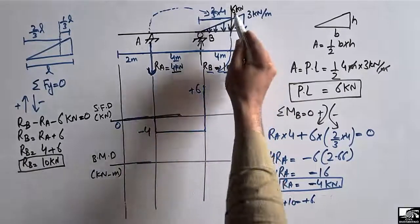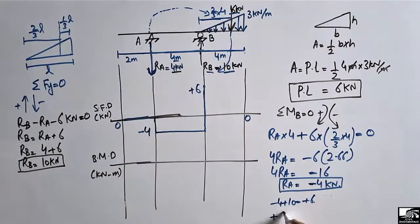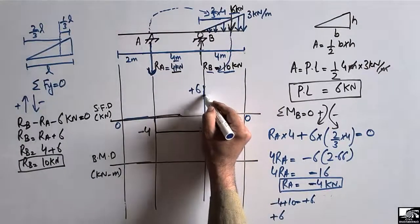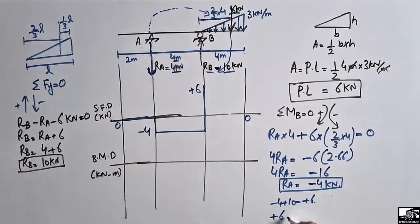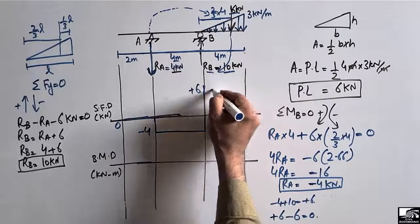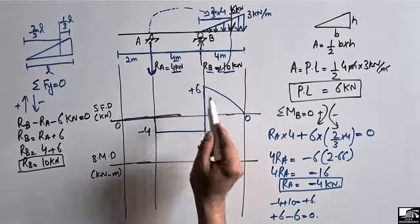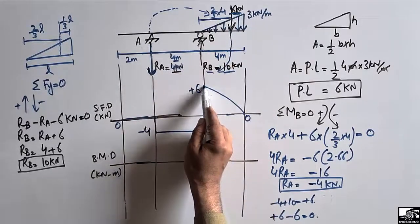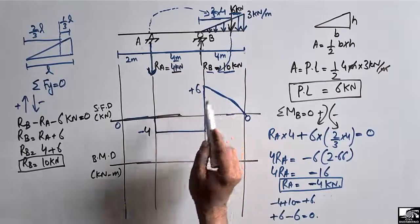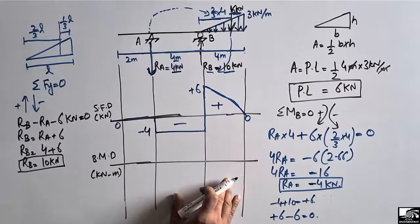After RB, there is the triangular load of 6 kilo Newton acting downward. The shear force was plus 6, and the load is 6 downward, so plus 6 minus 6 equals zero. The shear force line drops linearly to zero at the free end, forming a triangular shear box. This gives us a positive shear zone and a negative shear zone.